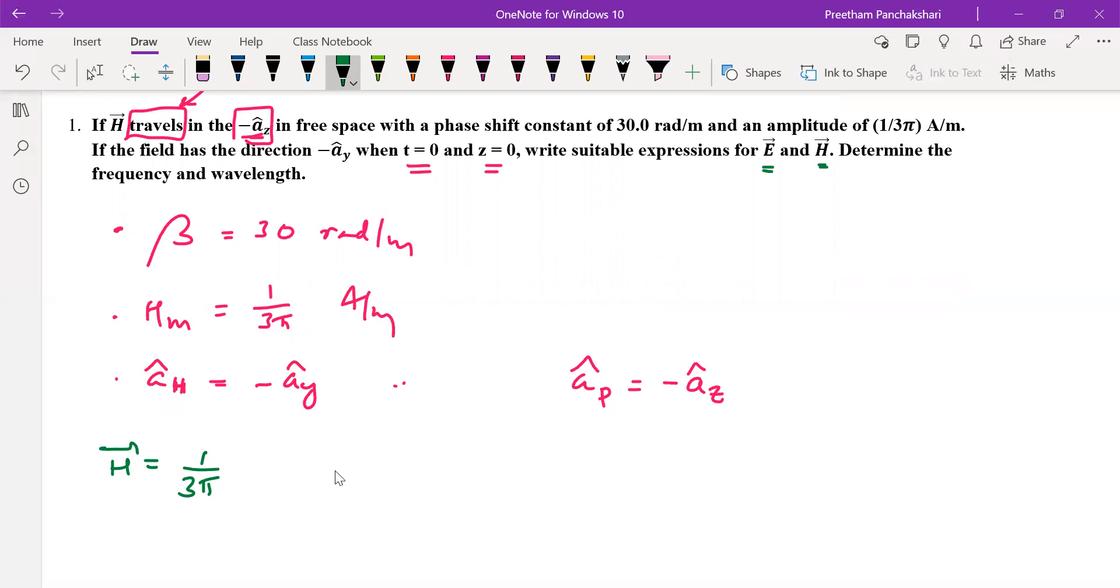Now, we can take the H field as a sinusoidal signal, either sine or cos. Then in standard form, it will be ωt minus β. Here, we have to identify the direction of the wave propagation. So the direction of the wave propagation is minus Az cap. So that's why this is going to be z minus into minus. This becomes plus. Next, the direction of H field that is minus A cap y.